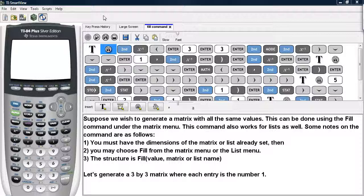You must have the dimensions of the matrix or list already set, then you may choose Fill from the matrix menu or the list menu. The structure is: activate Fill, type in the value that you want to fill the matrix or list with, and then provide the name of the matrix or the list.